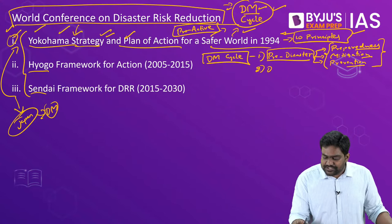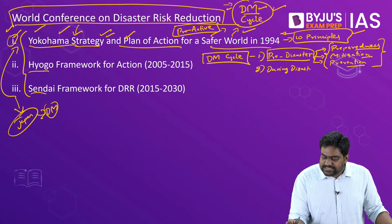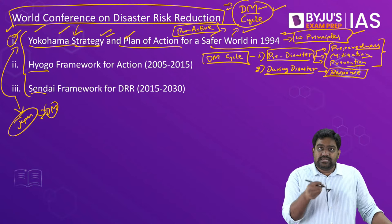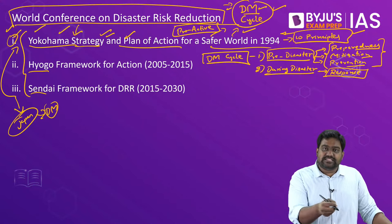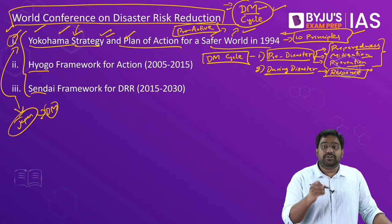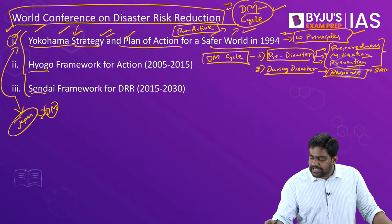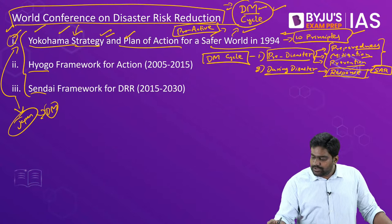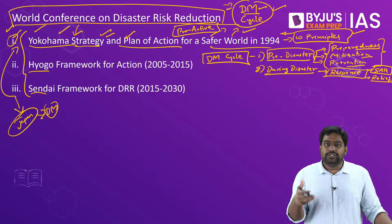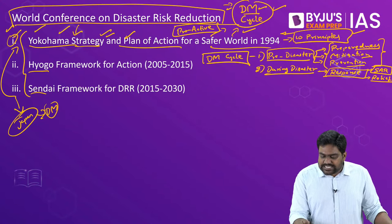The second phase is the during-disaster phase. During a disaster, the focus is on providing effective emergency response. When a disaster has already happened, the government at national, state, and local levels should respond effectively and immediately — carrying out search and rescue operations, providing emergency relief in the form of medical aid, food, clothing, and shelter. This happens to be the second phase in the disaster management cycle.